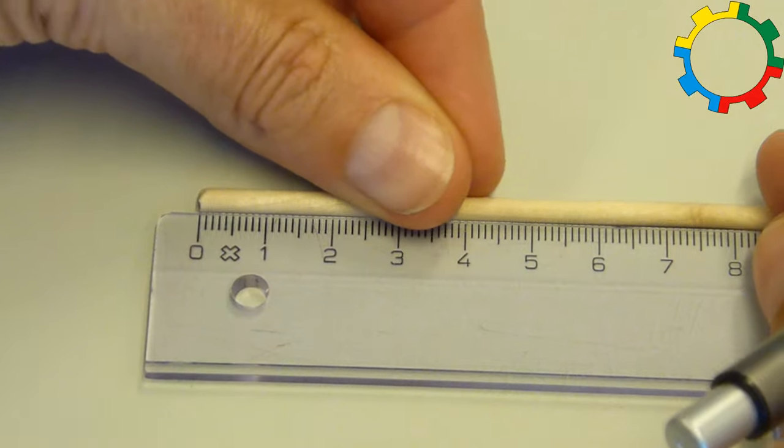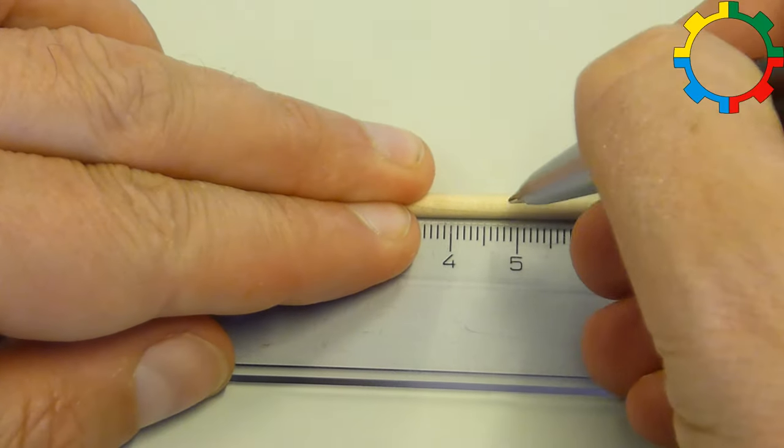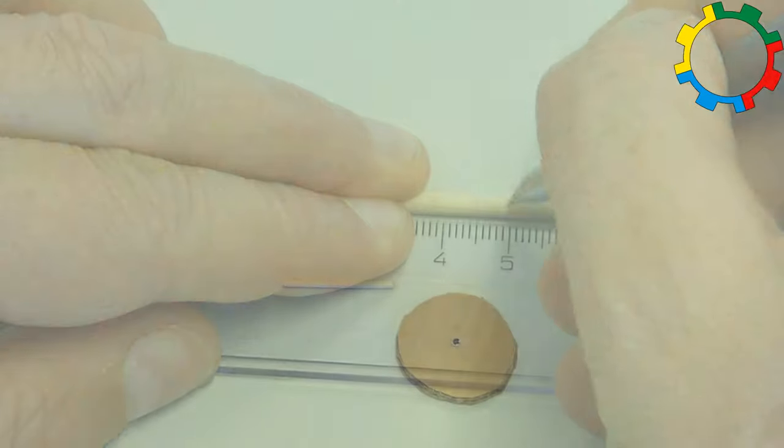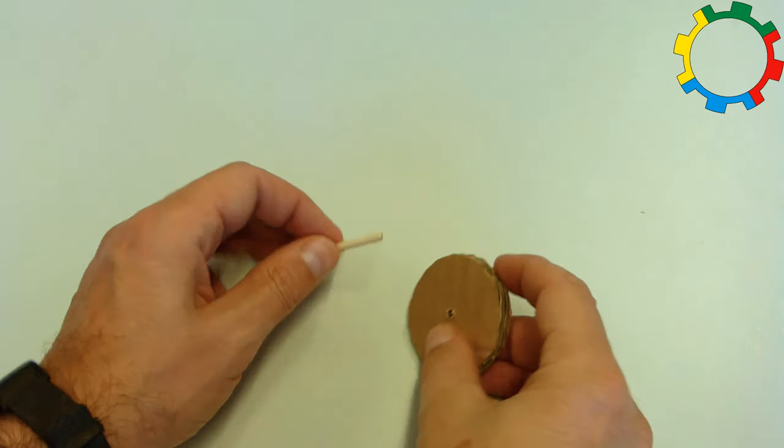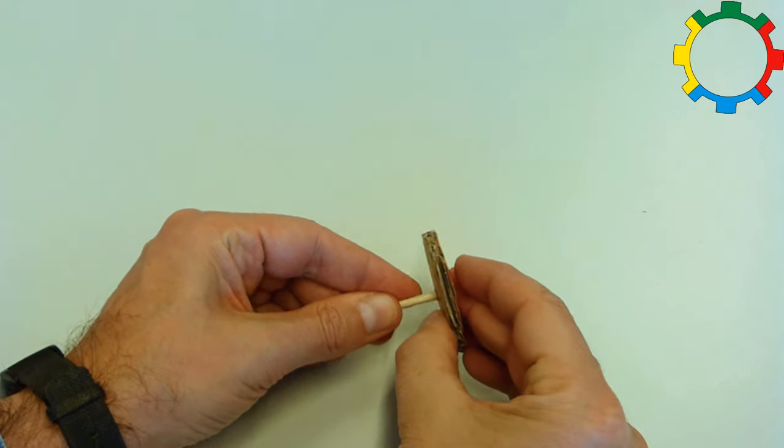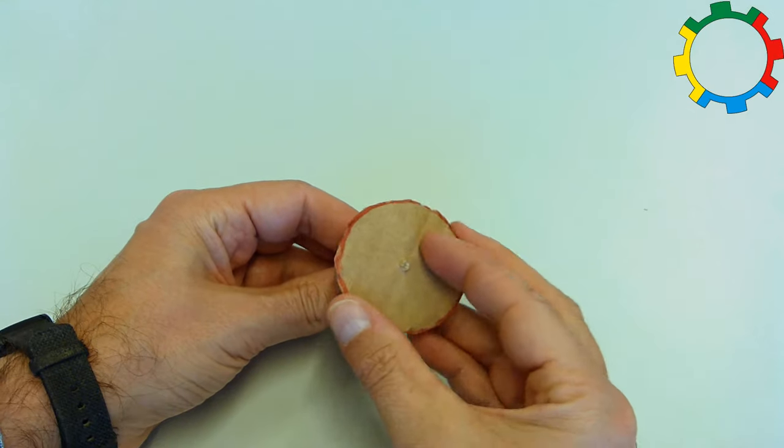Measure a piece of the skewer that is five centimeters long, and cut it off. This is the winch's axle. Insert this piece in one of the circles, so that it sticks out on one side only. This is the spool of the winch.